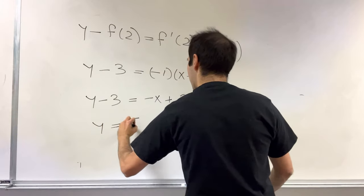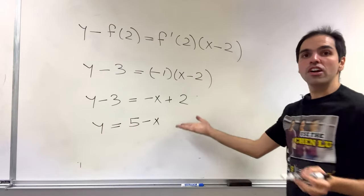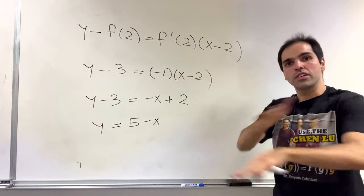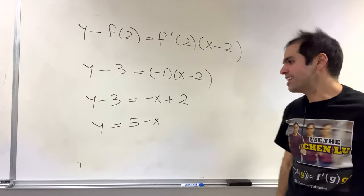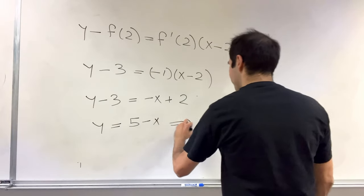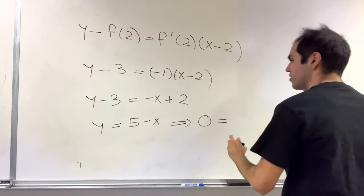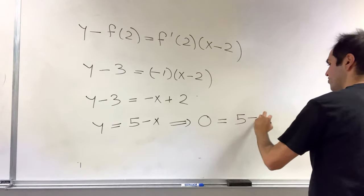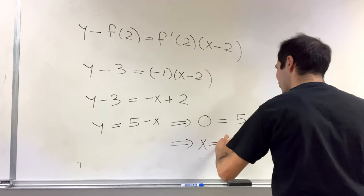And now the question is, when is y equal to 0? So when does the projectile hit the ground? Well, if you set y equals 0, you get 0 equals 5 minus x, and then x equals 5.